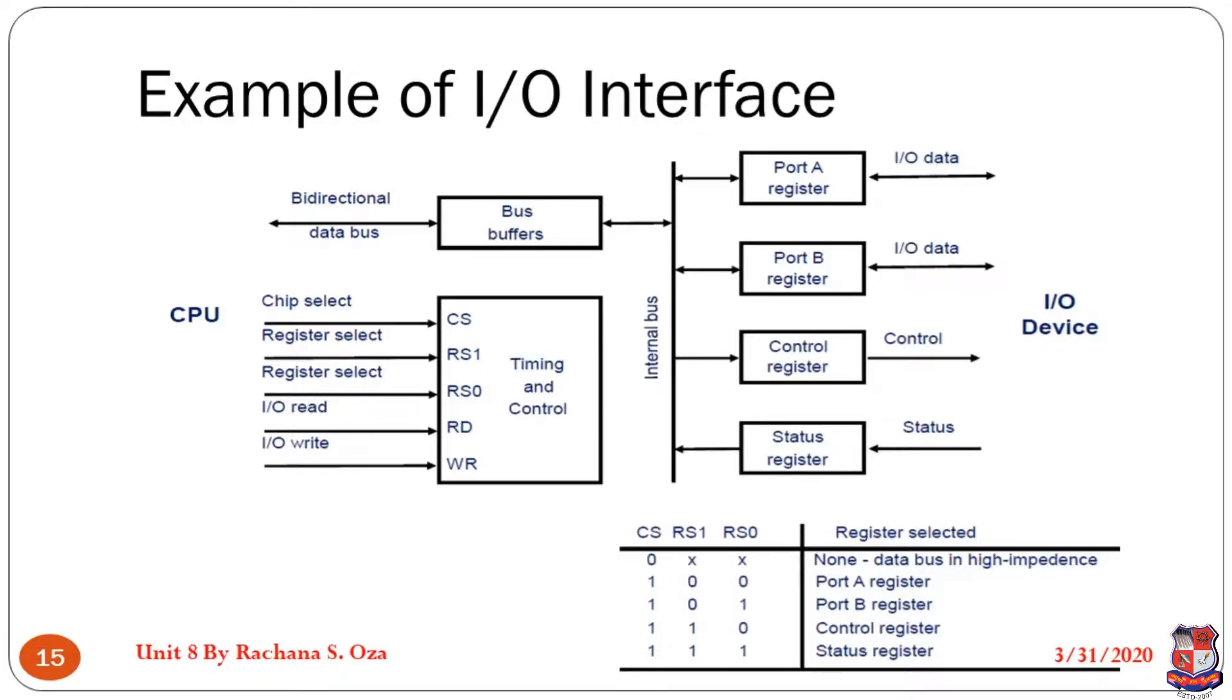Over here you can see that the complete command-based table is given. If the chip select is one, that means CPU is selecting this chip, so this CS signal is high. At the same time, if RS1 and RS0 are 00, what is the indication? CPU wants to deal with port register A. Similarly, the next command sequence is 101, that means port register B will come in the picture. The next two are 110 and 111, that means CPU wants to read the control register and status register respectively.